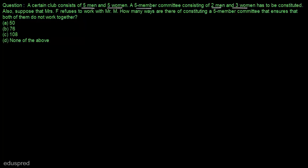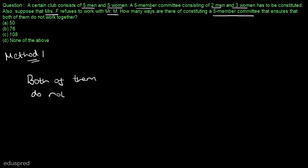These are the options given to us. There are two methods to solve this question. Let me start with method number 1. We have to calculate in how many ways we can constitute a 5-member committee such that Mrs F and Mr M do not work together. Let's form the cases.